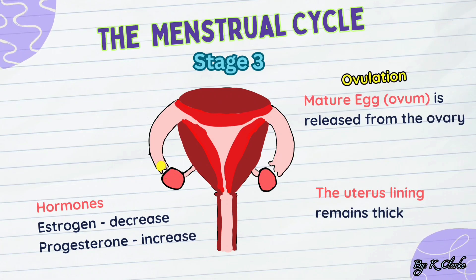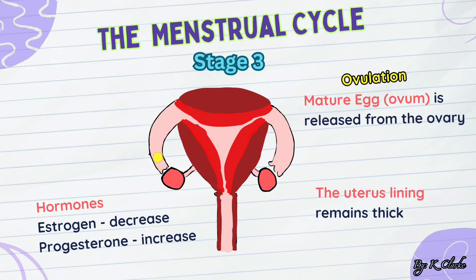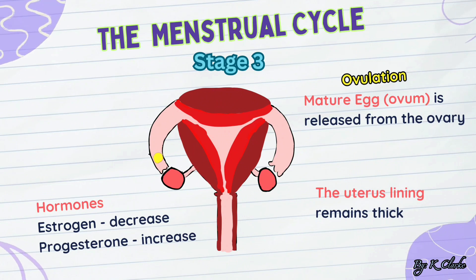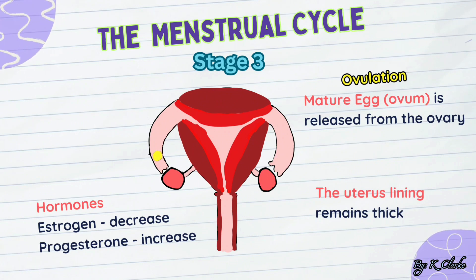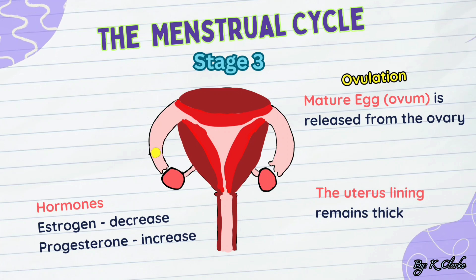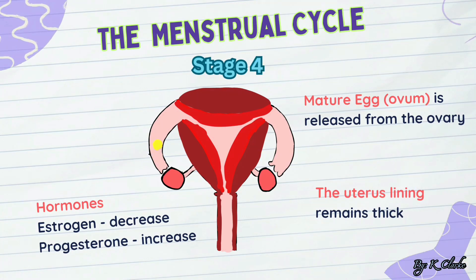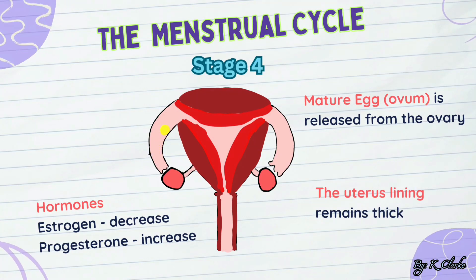Stage three: ovulation. This is when a mature egg is released from the ovary, which is caused by a decrease in estrogen. Ovulation usually occurs on the 14th day of the menstrual cycle.